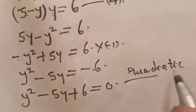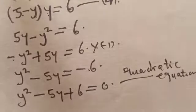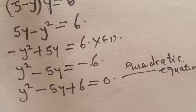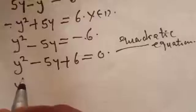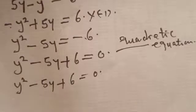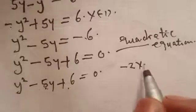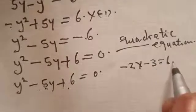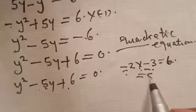Now let's solve our quadratic equation. We are looking for the value of y from y squared minus 5y plus 6 equals 0. We look for two values that multiply together to give plus 6 and add together to give minus 5. That gives us minus 2 multiplied by minus 3, which equals plus 6, and minus 2 plus minus 3 equals minus 5.